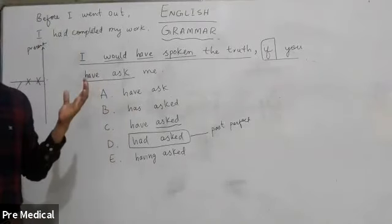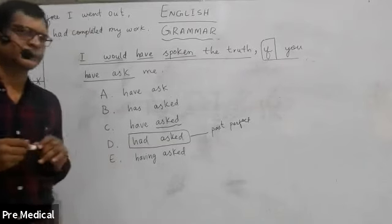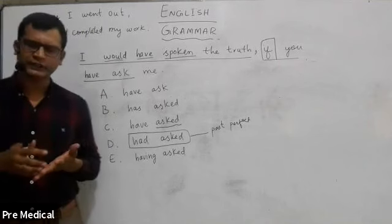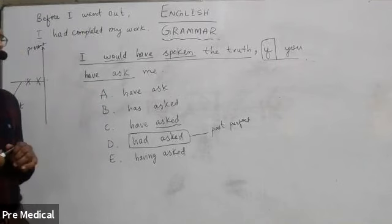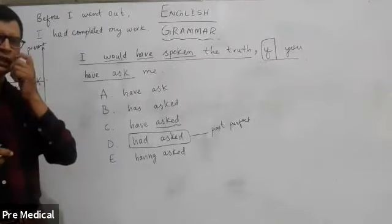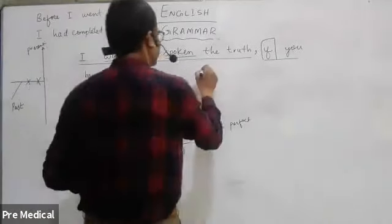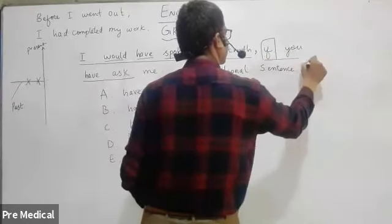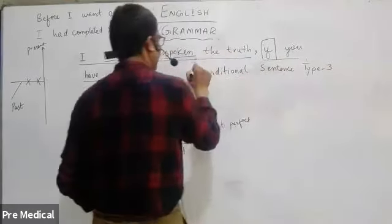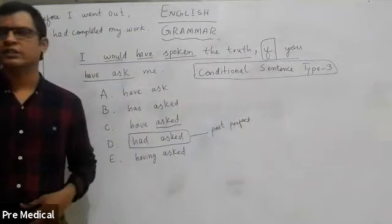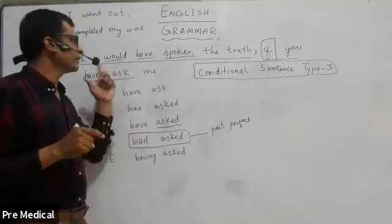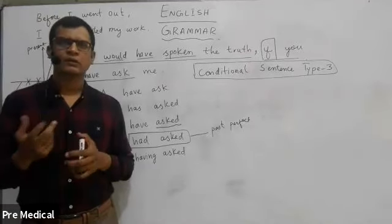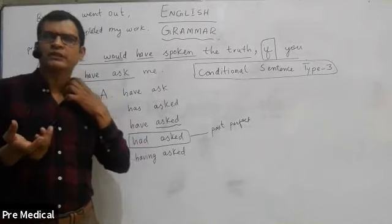There is a certain formula to this structure, and we call such structures conditional sentences. Basically there are three types, and there is one more called zero conditional which is a bit different. This structure, particularly, is conditional sentence type three. You need to keep in view that conditional sentence type three will have two parts, and these two parts of a sentence are called clauses.